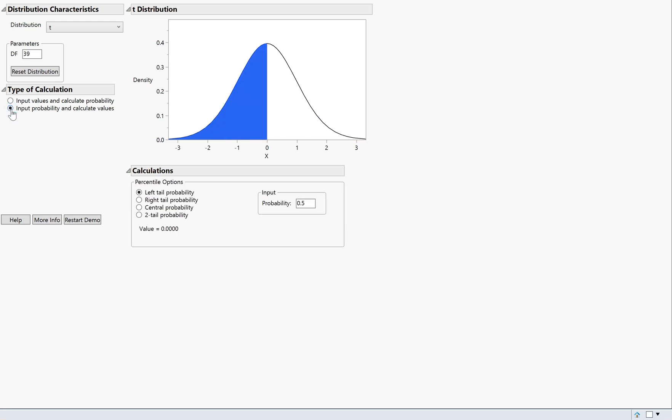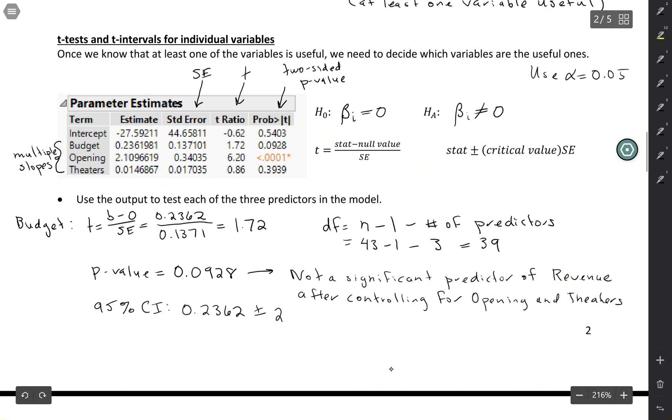Still 39 degrees of freedom, but this time I'm doing input probability and central probability. And I'm going to put in, for 95% confidence, .95. And this number that comes out is my t-star, 2.0227. So t-star is 2.0227. And I plug in my standard error, so I had .1371 here.